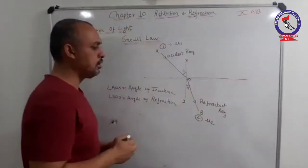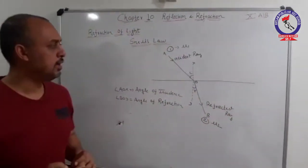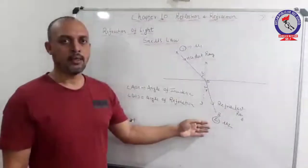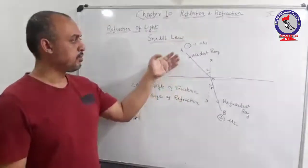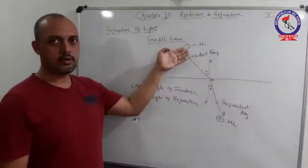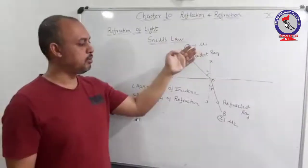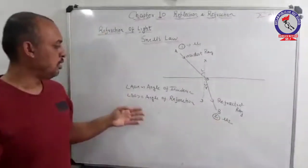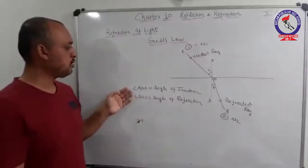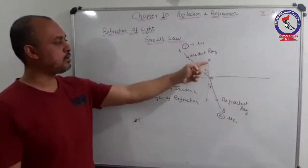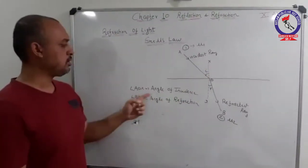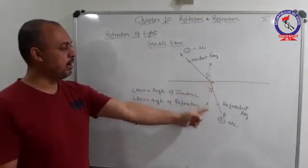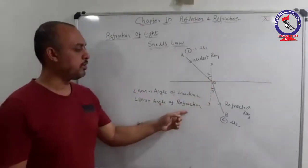From the diagram it is clear that the light is traveling from a rarer medium to a denser medium, having refractive index of the rarer medium as mu one and refractive index of the denser medium as mu two. Here, angle AOX represents the angle of incidence and angle BOY represents the angle of refraction.